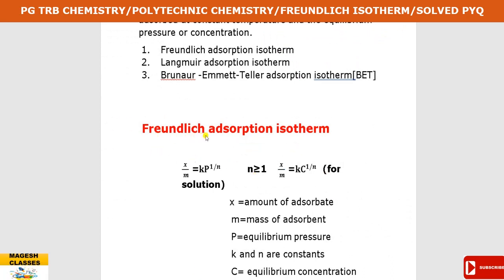The Freundlich adsorption isotherm is expressed mathematically as: x by m is equal to k into p power 1 by n. Here k is the adsorption constant, m is the mass of the adsorbent, and x by m (also called theta) is the surface coverage. Surface coverage and pressure are directly proportional. In case of solution, x by m equals k into c power 1 by n, where c is the equilibrium concentration. The n value is equal to or greater than 1.